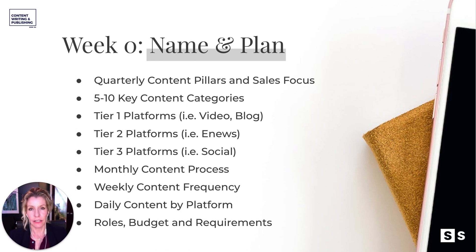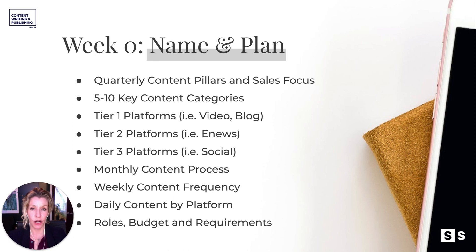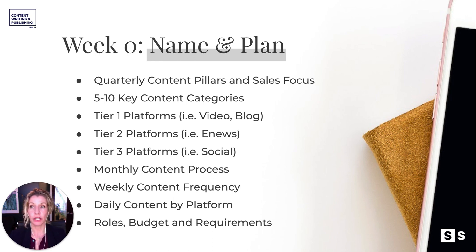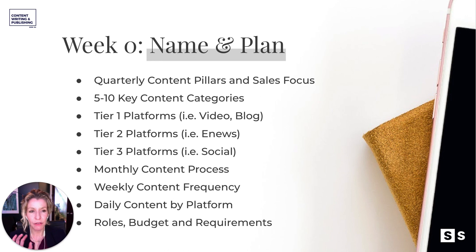So a little bit more on this as a recap — week zero, we'll call it, that's the start of the quarter. Coming up with your sales focus, marketing focus, your categories, and being clear on what your tier one platforms are, your tier two and tier three, the monthly content process — how you're getting it done — the weekly content frequency, how much, how often, where are you posting? Is it five posts on social per month or is it 20, or per week? And then daily content by platform, roles, budget requirements — basically having another look at your overarching social media plan.